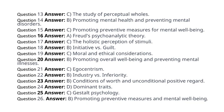Question 19 Answer C — Moral and ethical considerations. Question 20 Answer B — Promoting overall well-being and preventing mental illnesses. Question 21 Answer C — Egocentrism. Question 22 Answer B — Industry vs. inferiority. Question 23 Answer B — Conditions of worth and unconditional positive regard. Question 24 Answer D — Dominant traits. Question 25 Answer C — Gestalt psychology. Question 26 Answer B — Promoting preventive measures and mental well-being.